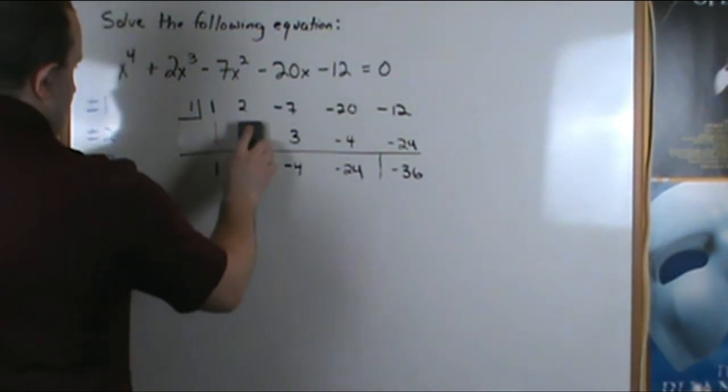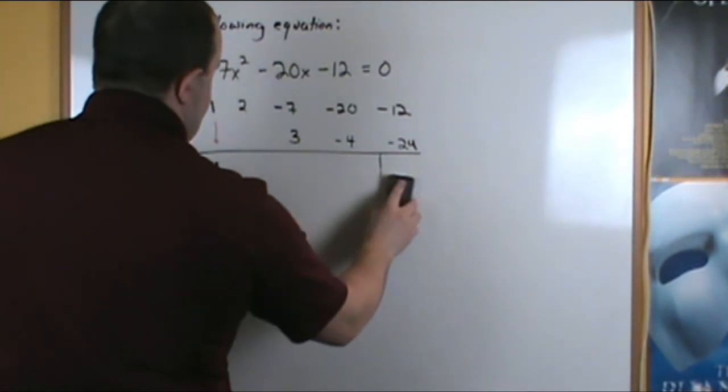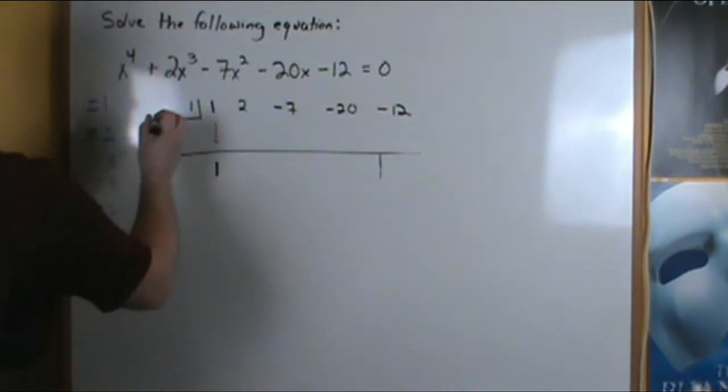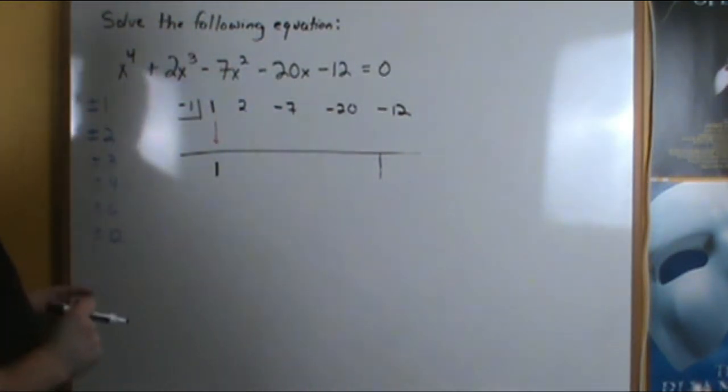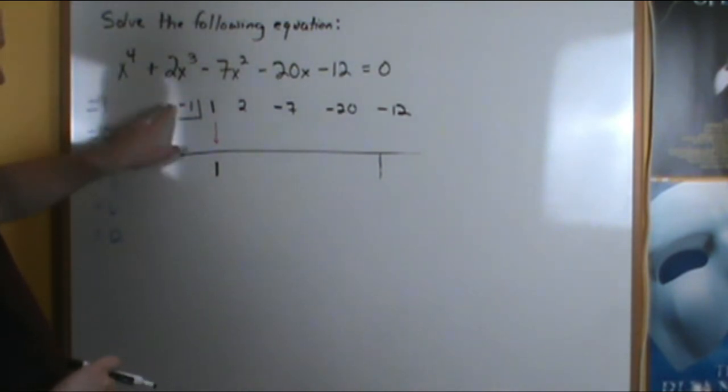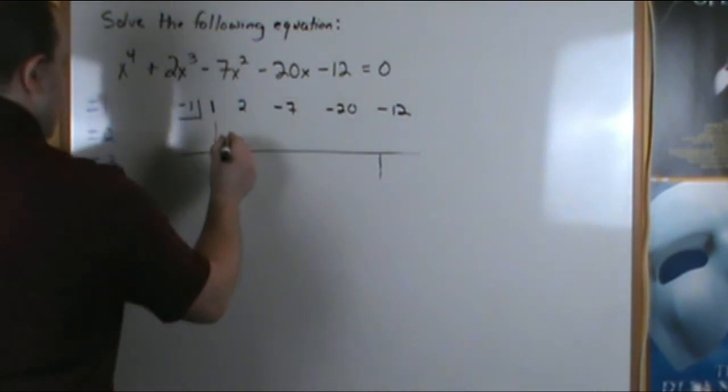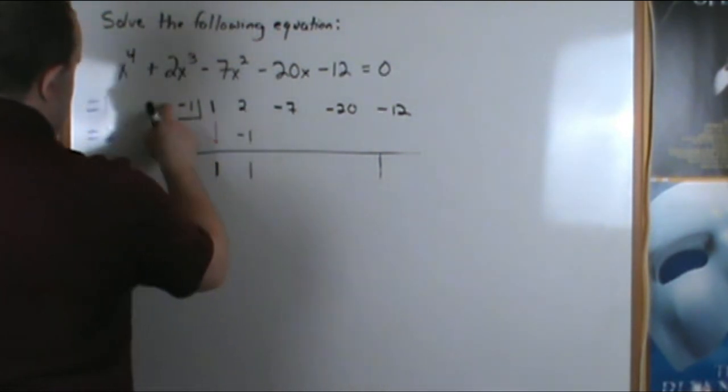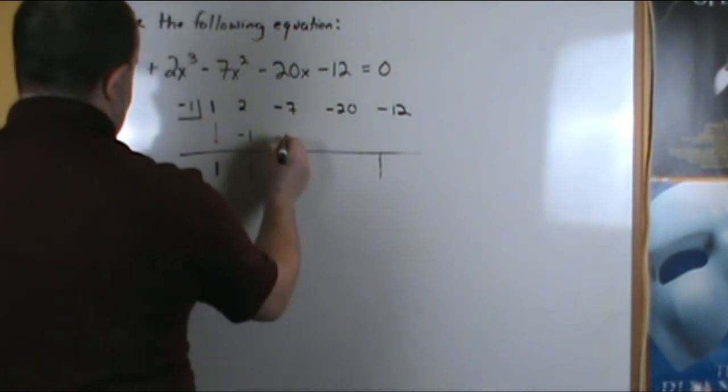And we could try negative 1 and see what happens. So if we have a negative 1 here, we still bring the 1 down. So 1 times negative 1 here is negative 1. 2 plus negative 1 is positive 1. Negative 1 times 1 is negative 1.